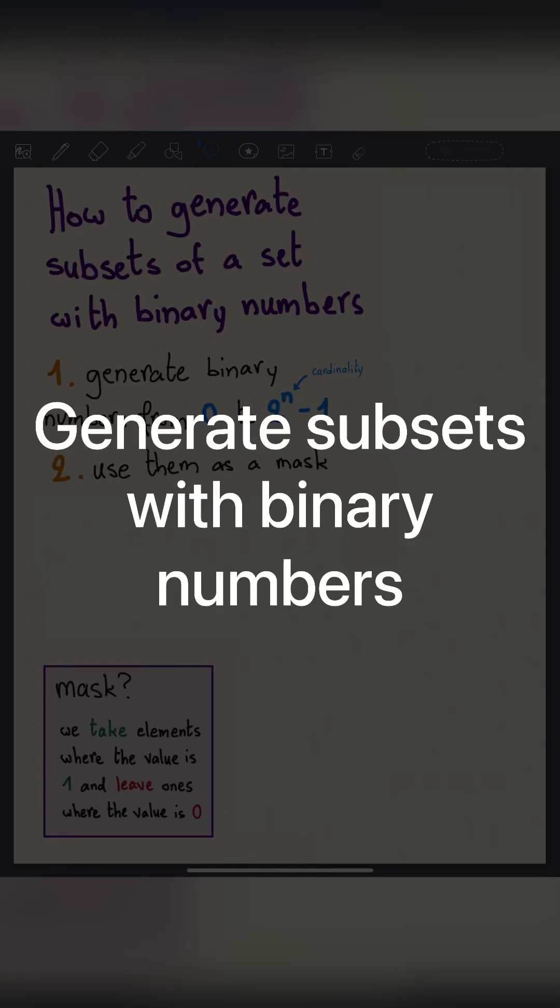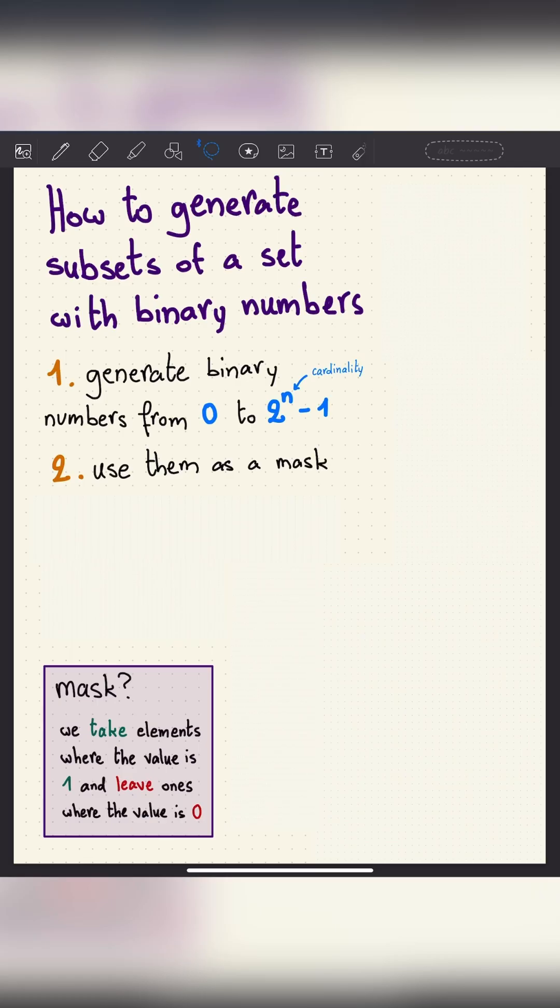How to generate subsets of a set with binary numbers: two easy steps. First, we generate binary numbers from 0 to 2^n - 1, where n is the length of the set. Second step: we use them